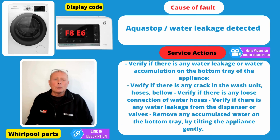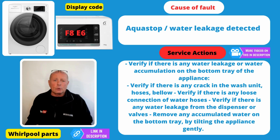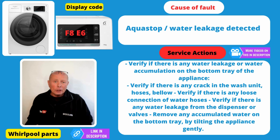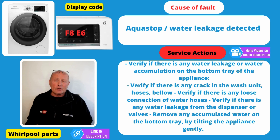Error Code F8E6. Whirlpool are calling it an aqua stop — it's actually an anti-flood device which is usually in the bottom tray of the machine. This is activated and will cut the machine off when water is getting into the base of the machine for safety purposes. You want to inspect things like any holes in the door seal, maybe a shaft on the pump leaking, or any other hoses that may be letting water to the bottom of the machine.